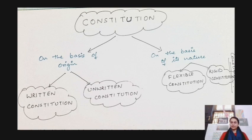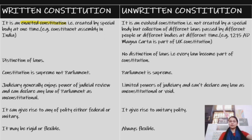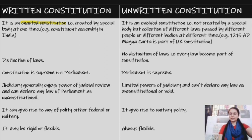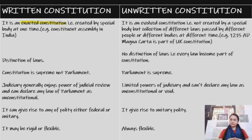Let's start with the written and unwritten constitution. In a written constitution, it is an enacted constitution. Enacted means it is created by a special body at one time. In India, our Constituent Assembly sat for 2 years 11 months to complete our constitution.